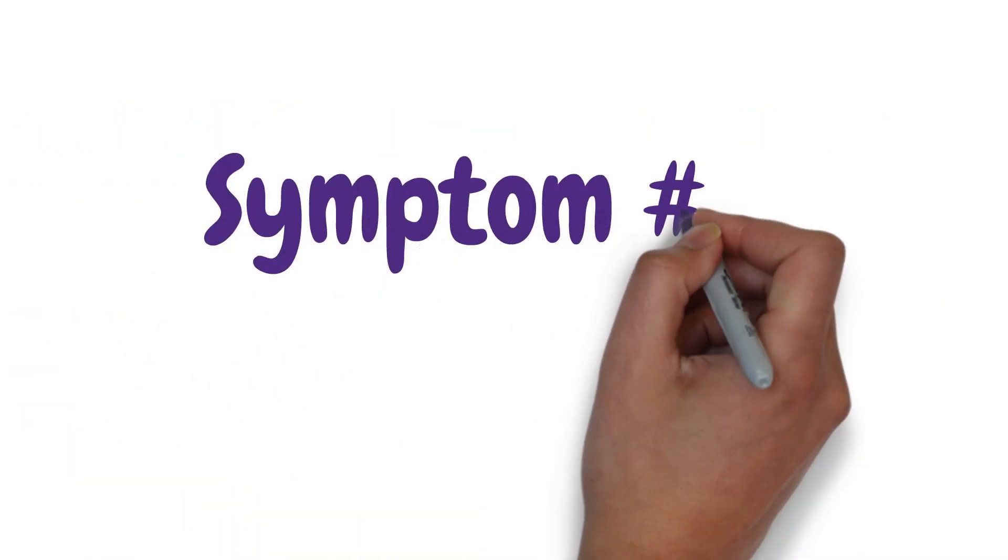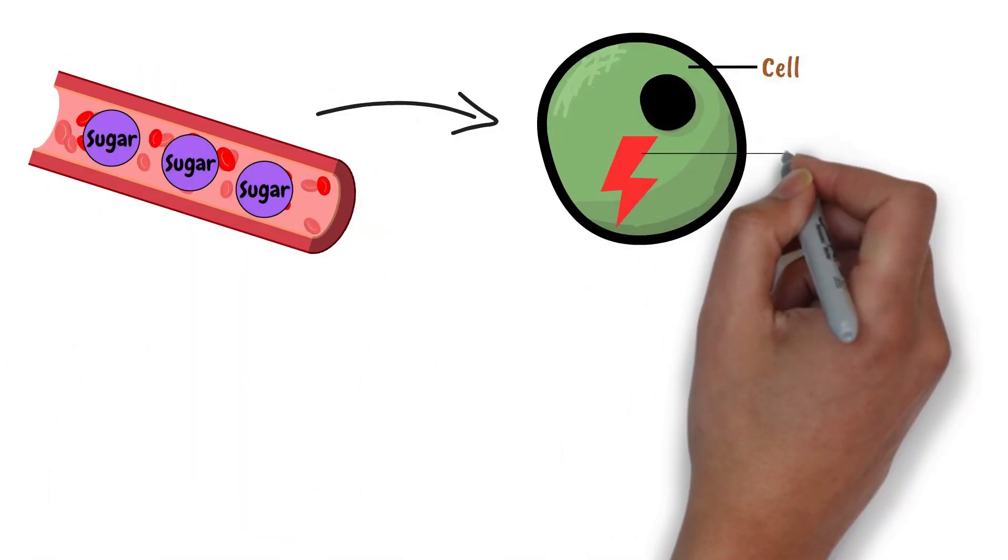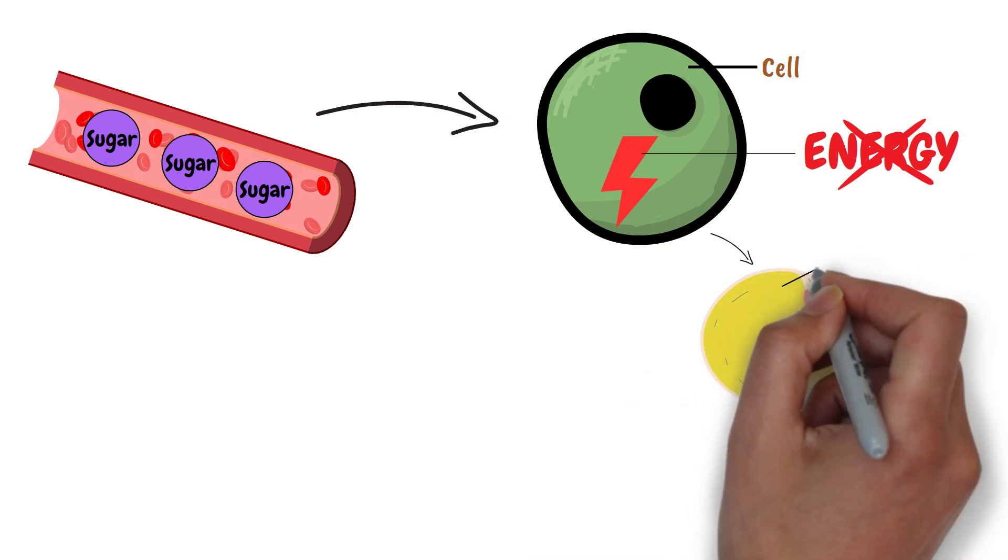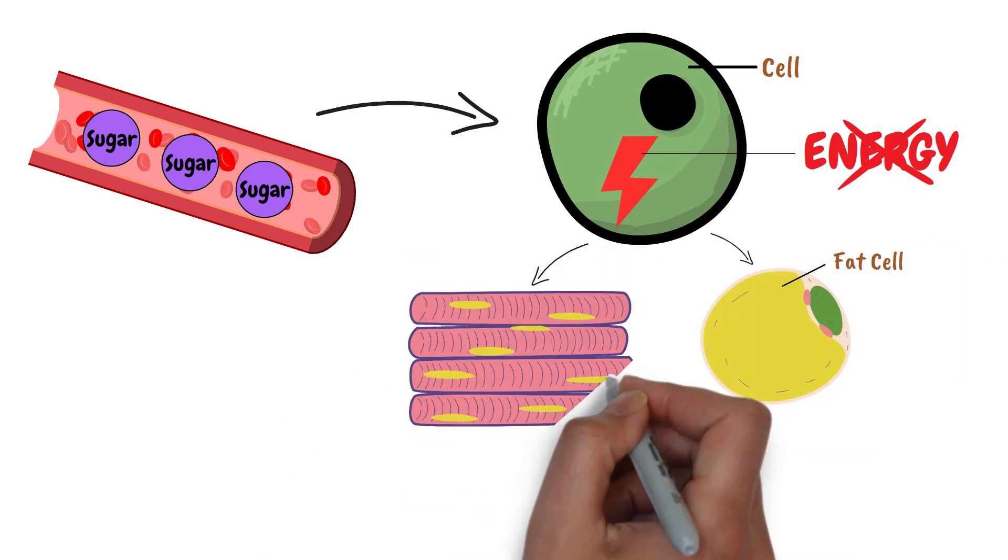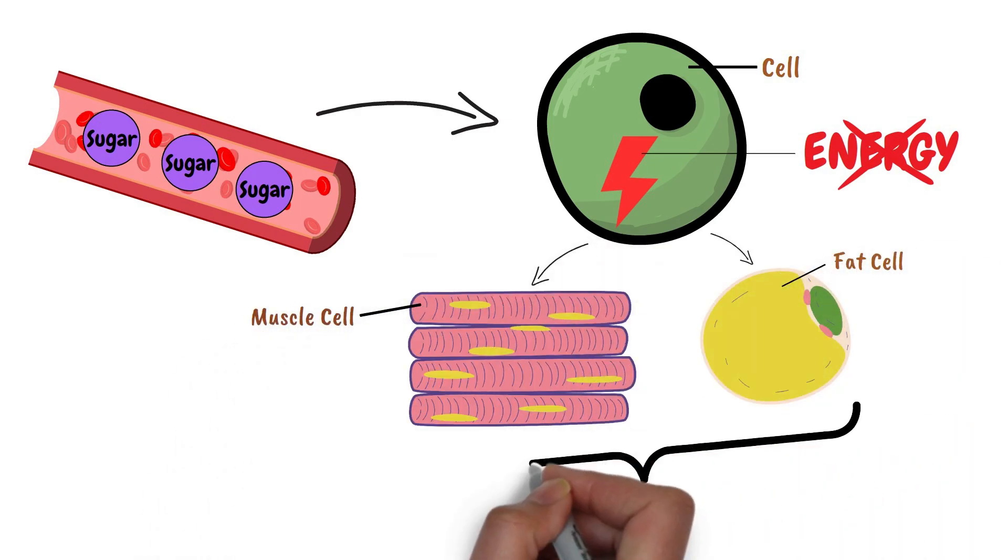Symptom number 5 is unexplained weight loss. Because the sugar stays in your blood, your body does not get the fuel it needs. As a result, it begins burning fat and muscle for energy, which can result in unexplained weight loss.